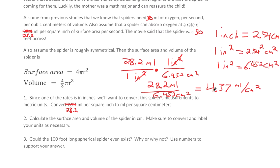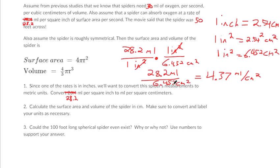And then if we want to simplify that, we're going to take the 28.2 milliliters divided by 6.452 square centimeters and that's 4.37 milliliters per square centimeter. So that's part one. Instead of using 28.2 though, you're going to use the number that's in the Problem of the Week.